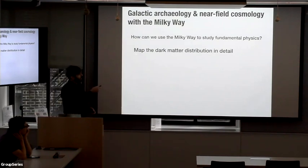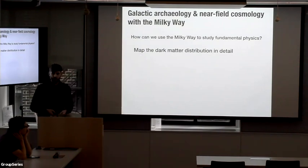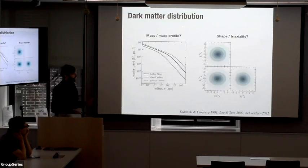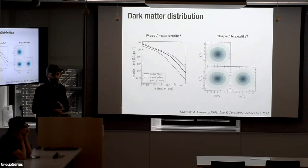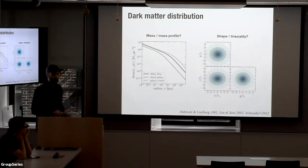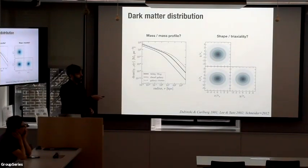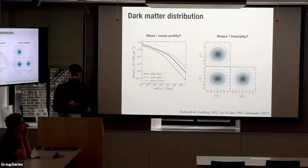The first is to map the dark matter distribution around the Milky Way in extreme detail — really trying to test predictions from simulations, like the density profile or the mass profile of the global dark matter distribution. But also other low-order properties of the dark matter, like the shape or the triaxiality on large scales.